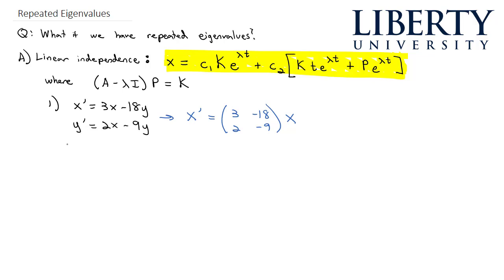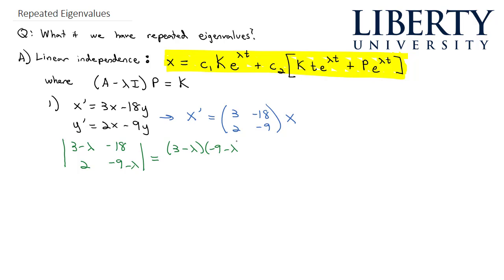That coefficient matrix helps us find the eigenvalues. We set up the determinant with 3 minus lambda, negative 18, 2, and negative 9 minus lambda, and compute: (3 minus lambda)(negative 9 minus lambda) minus (negative 18)(2), which is plus 36, equals zero.